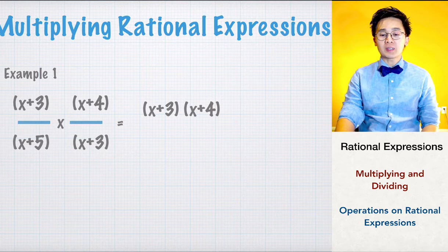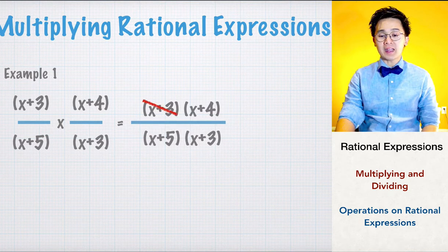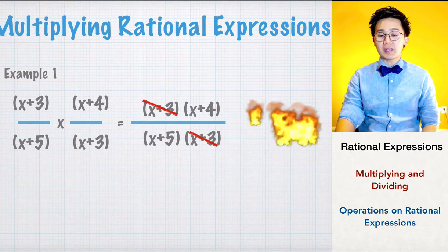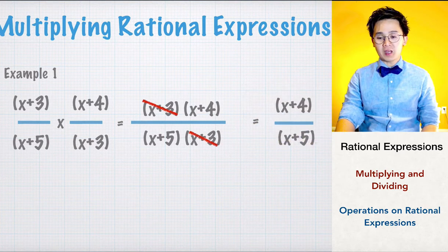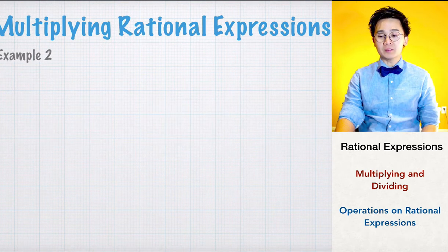We multiply by combining the numerators and placing the denominators as x plus 5 times x plus 3. Notice that x plus 3 and x plus 3 can be canceled out, leaving us with x plus 4 all over x plus 5. This is the product of our first example.